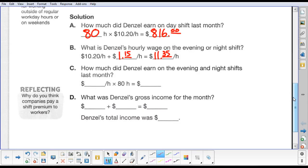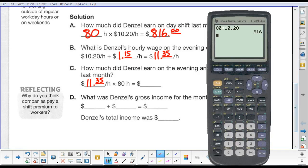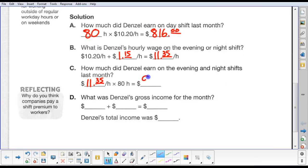So how much did Denzel earn on the evening and night shifts? Well, we know that he was going to earn $11.35 per hour times 80 hours. So we'll just take our calculator and we'll do $11.35, multiply that by 80 hours. And he made $908.00 with a shift premium.